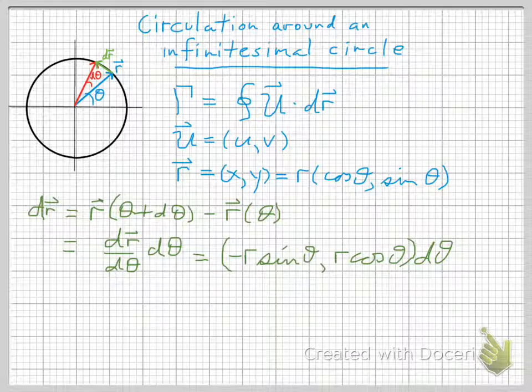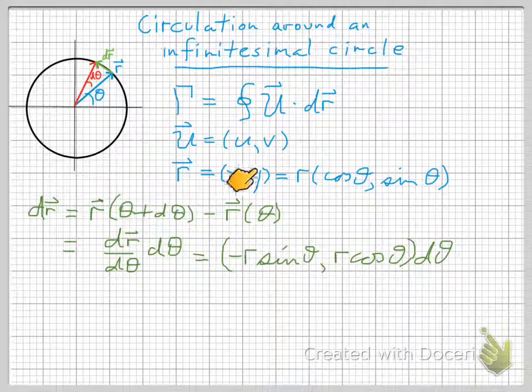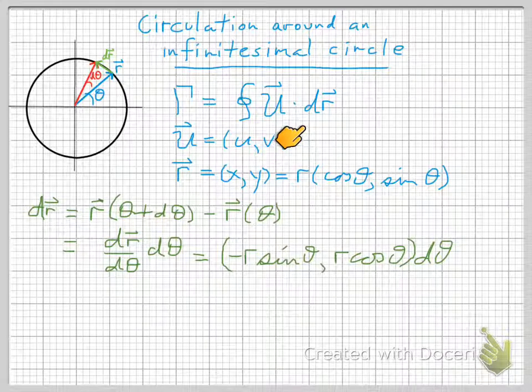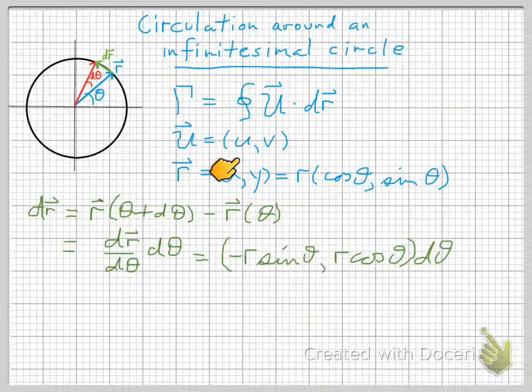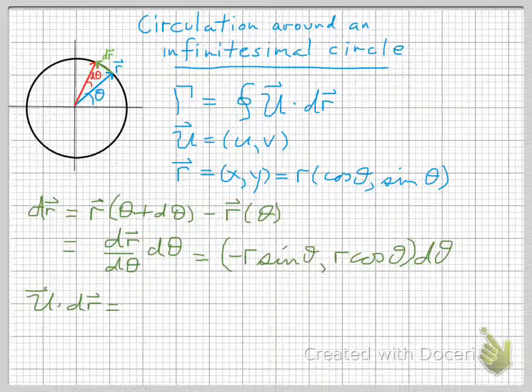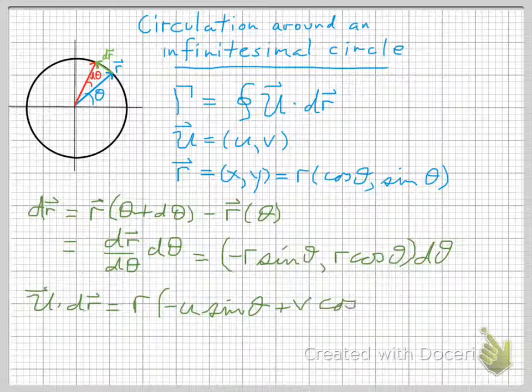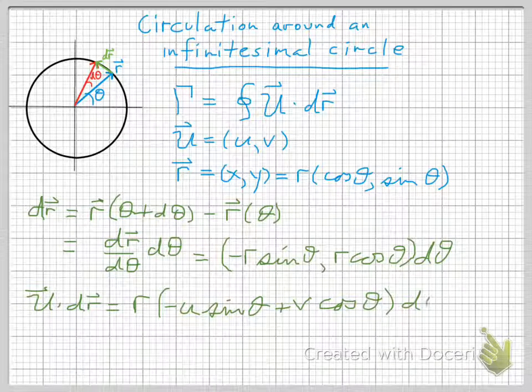Okay, so now we've got one of the quantities that we need for the integrand. We've got dr, and now we need to dot it with u, which is this quantity right here. We'll write u dot dr as, well, we can take out the common factor r, and write r negative u sine theta plus v cos theta d theta.